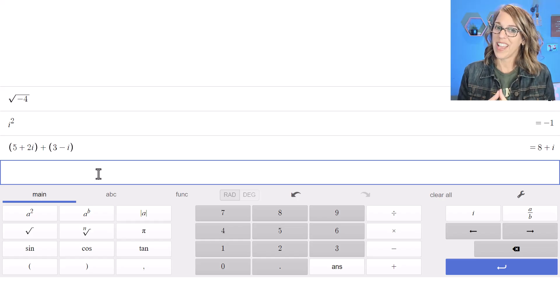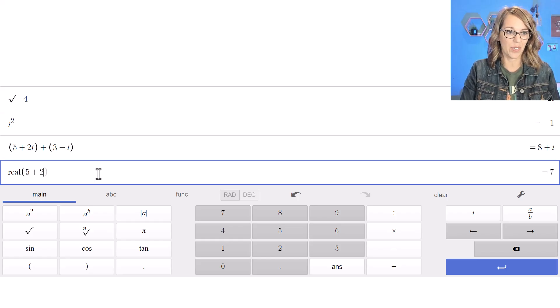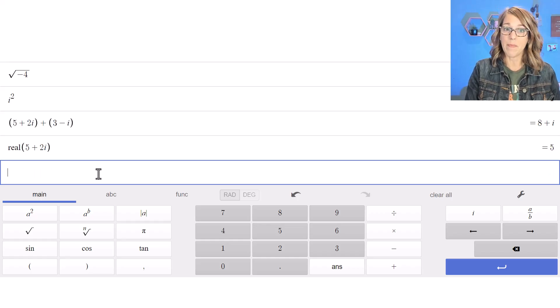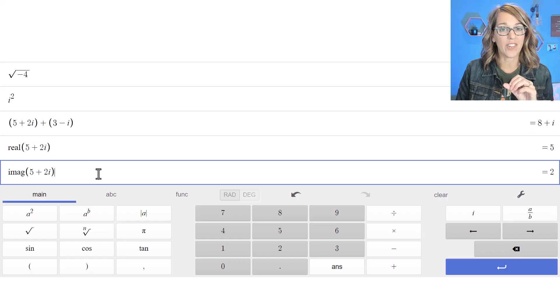Speaking of those real and imaginary parts, I can ask for those by doing real and then 5 plus 2i, and it returns the number 5. And I can also do imaginary, imag 5 plus 2i, and then it gives me that value 2 which is for the imaginary unit.